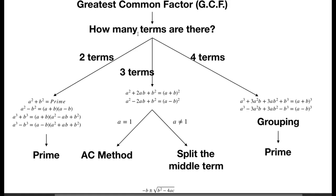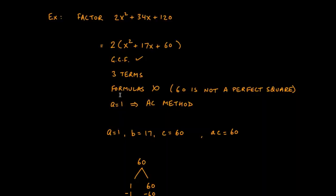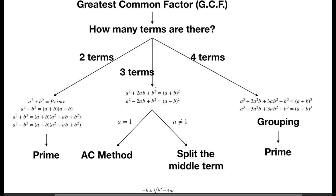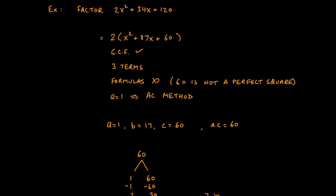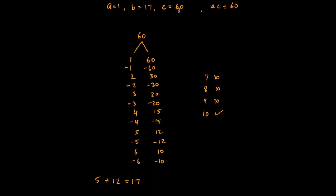After factoring out the GCF, we ask: how many terms? Three terms. The formulas don't work because 60 is not a perfect square. So we come down the branch where a is 1 — when we factored out the 2, we were left with a coefficient of 1 on x². So for this problem, a = 1, b = 17, and c = 60. We multiply a and c: a × c = 60, and now we find the factors of 60.